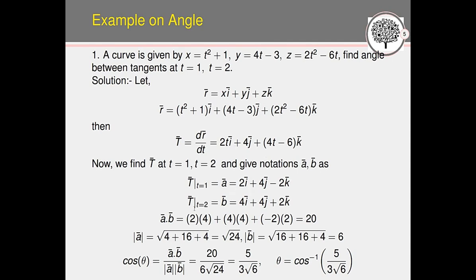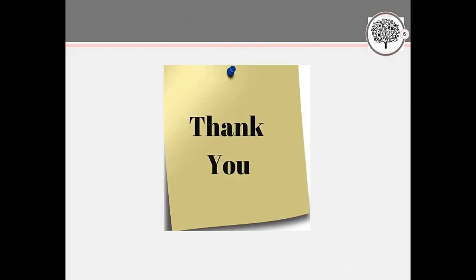Magnitude of a = √(2² + 4² + (−2)²) = √(4 + 16 + 4) = √24. Magnitude of b = √(4² + 4² + 2²) = √(16 + 16 + 4) = √36 = 6. Therefore, cos θ = a·b / (|a|·|b|) = 20 / (6√24) = 5 / (3√6). So θ = cos⁻¹(5 / (3√6)).